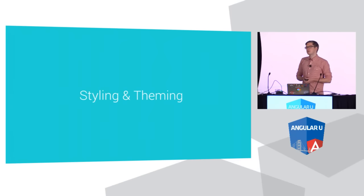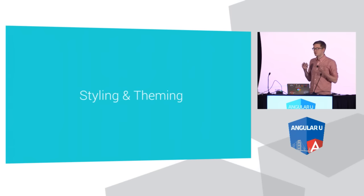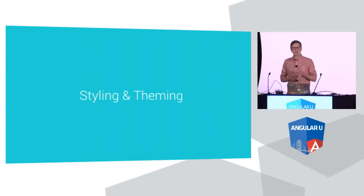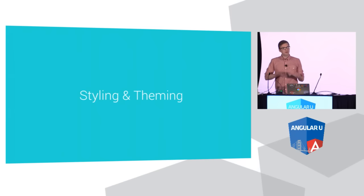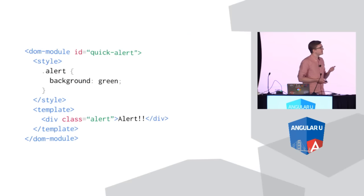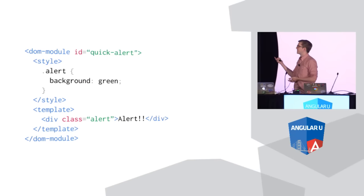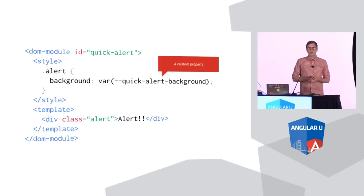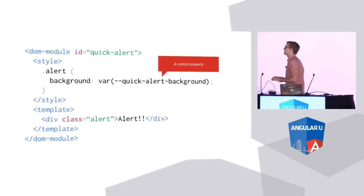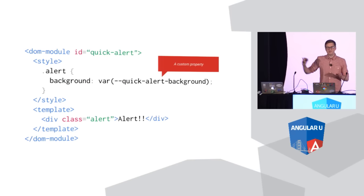For Polymer 1.0, we started working on a brand new system that leverages CSS custom properties. If you haven't heard of CSS custom properties before, you can think of them like really flexible variables. CSS preprocessors like Sass or Less have the notion of variables — custom properties are variables, but the big difference is that they're standards track. Custom properties are CSS variables that are already shipping in Firefox and being worked on in Chrome. So we built our whole theming system around custom properties. If I want to change the background color of this quick-alert element, I can do that using this custom property syntax.